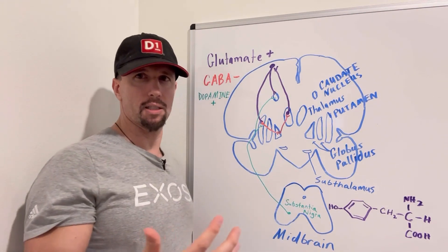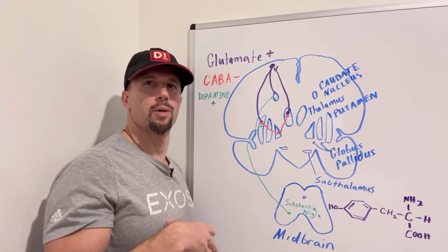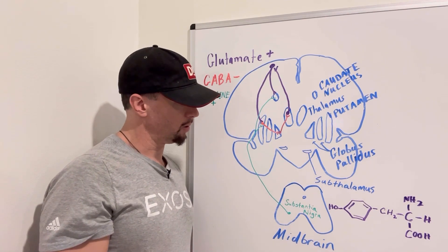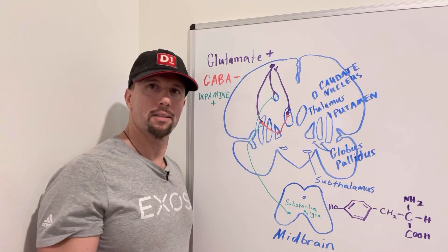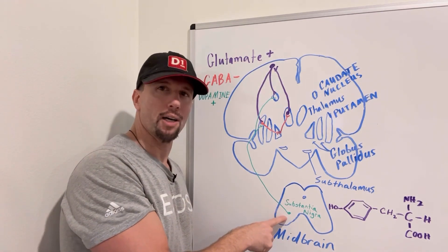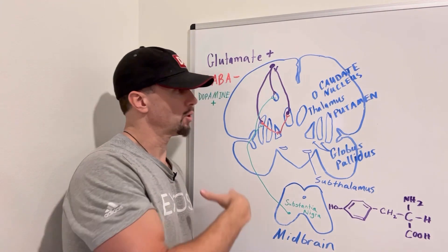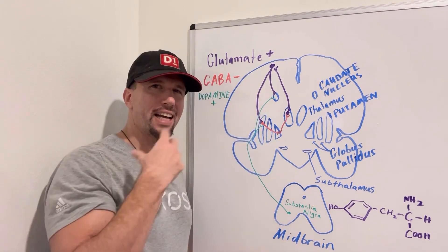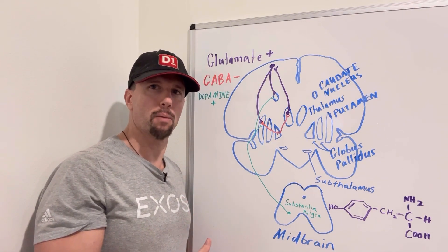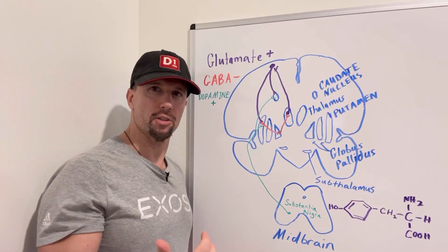This is one thing Parkinson's patients suffer from — they have trouble getting started, whether it's walking or other movements. To treat it, you have to replace the dopamine. These dopaminergic neurons get destroyed in the disease. However, you can't just take dopamine orally and expect it to reach the brain, because dopamine doesn't cross the blood-brain barrier. So you have to give a precursor to it instead.